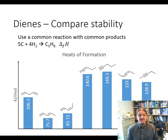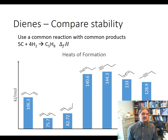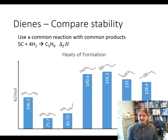I want to compare the stability of the different isomers of C5H8. I've included some alkynes for comparison because there's something really interesting there. We're going to use heats of formation — using a common reaction with the same reactants, five carbons and four hydrogen molecules to make C5H8. The comparative heats of formation tells us something about the relative stability of the compounds themselves.